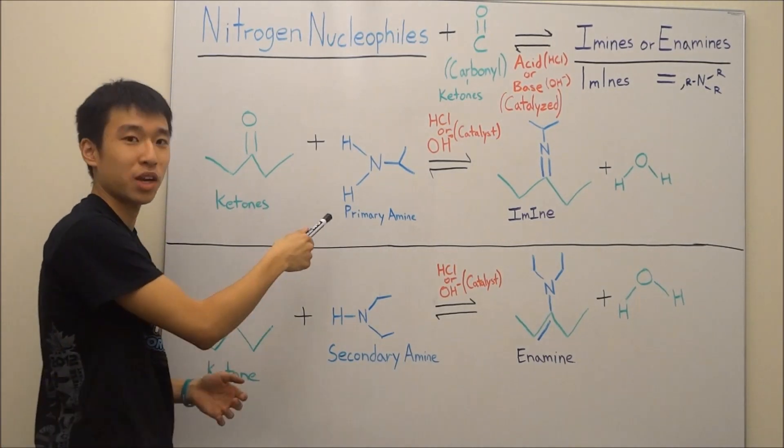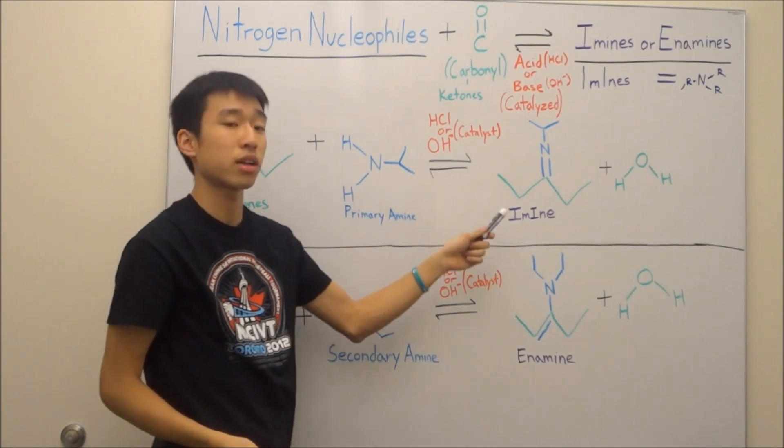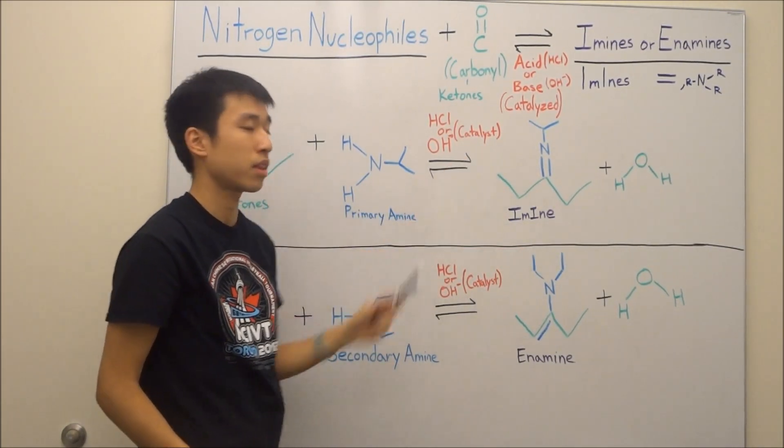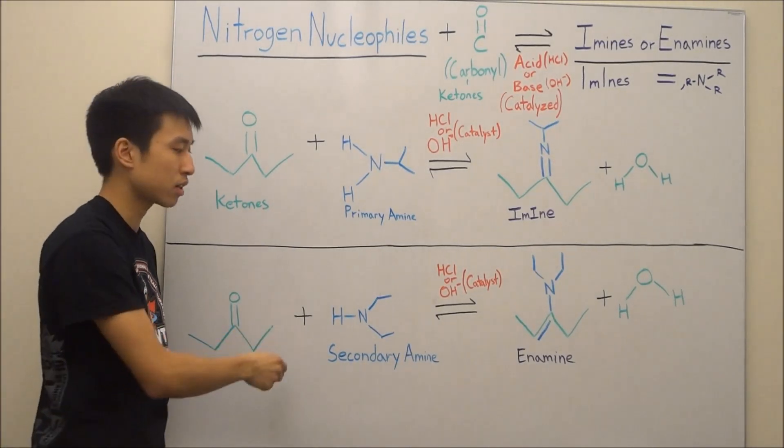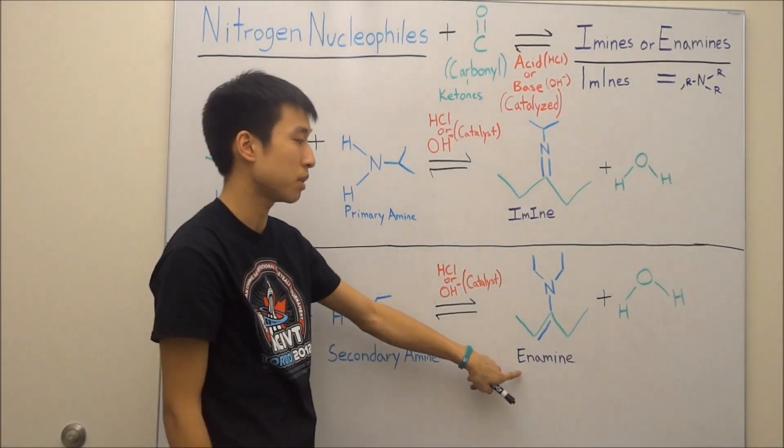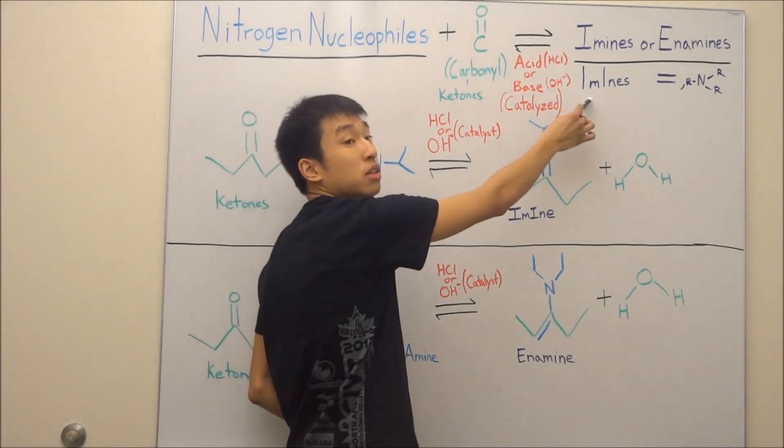So in your reaction where you did a primary amine and a ketone and you combined them, you should have gotten an imine, which is this product here, and water as well. But when you did the reaction with ketone and a secondary amine, you should have gotten an enamine, which is right here.